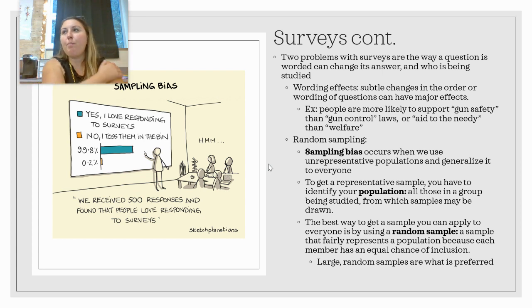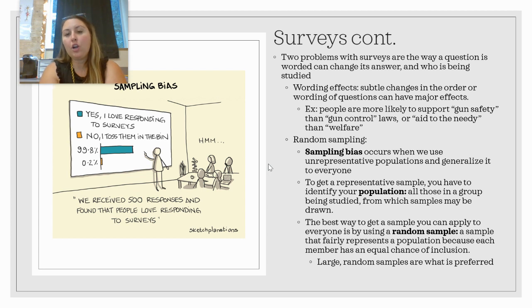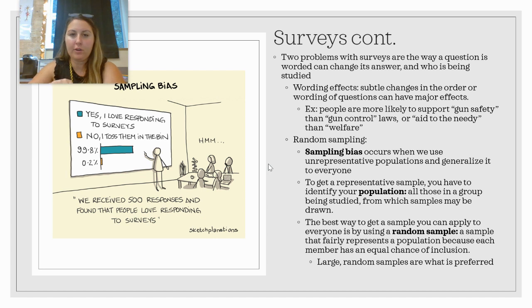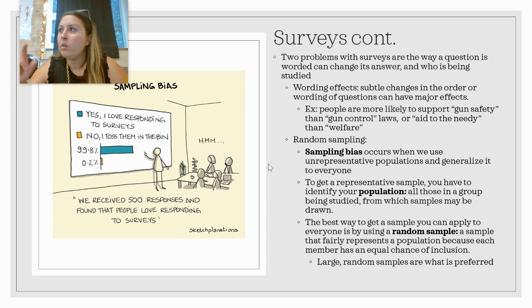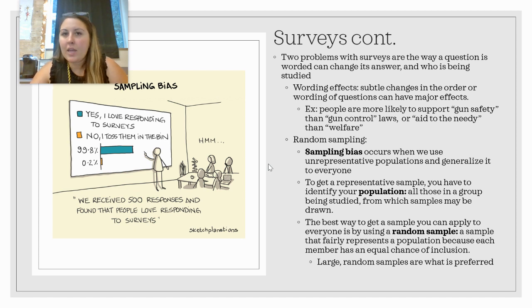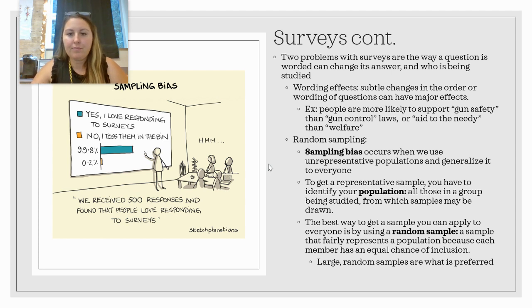The population being studied is also very important. Something we want to avoid is sampling bias, which occurs when we use an unrepresentative population and then generalize it to everyone. For example, if I wanted to study our school and only polled leadership kids for their opinions on dress code, that would be an unrepresentative sample because leadership kids may be fundamentally different from the rest of the school population.